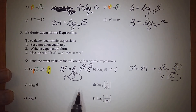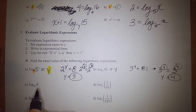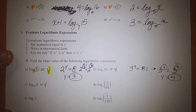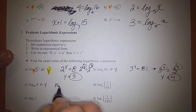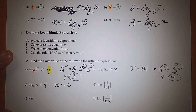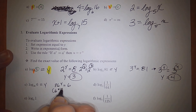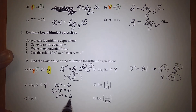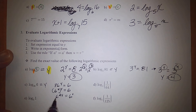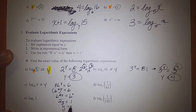For log base 36 of 6, set it equal to y. In exponential form: 36 to the y equals 6. Since 36 is 6 squared, we have 6 squared to the y power equals 6 to the first. When you raise a power to a power, multiply the exponents: 2y equals 1, so y equals 1/2.